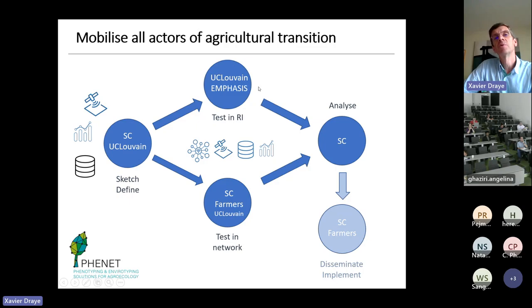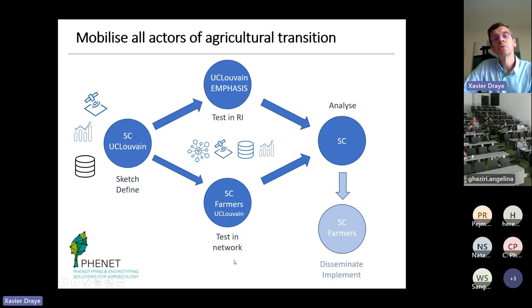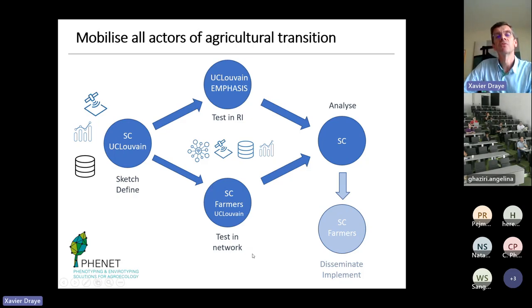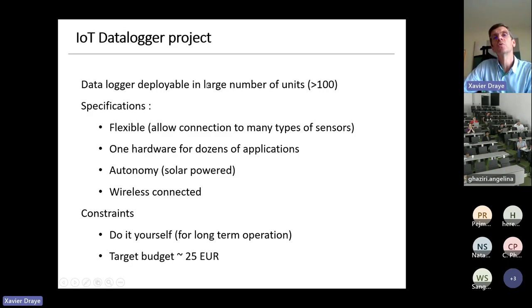We have a parallel workflow where an experiment is conducted in research infrastructure, but at the same time a simpler experiment is done in farmers' fields — in a network, and the ambition is that the network can be wide. That's why earth observation is here. At the end of the day, all the data come back to a central node where the private actor does the analysis with support from scientists, ending in dissemination and implementation. When talking about testing in networks, we probably mean hundreds of fields, and how we make observations at that scale is really important. That's where the data logger project comes into play.